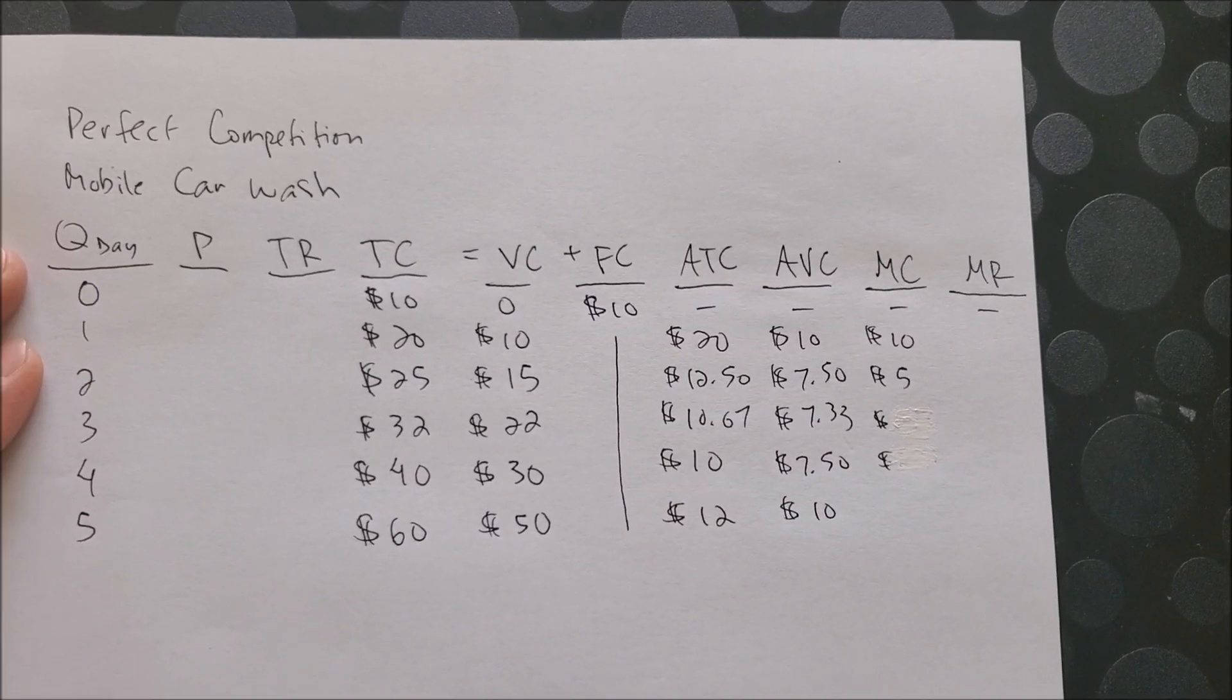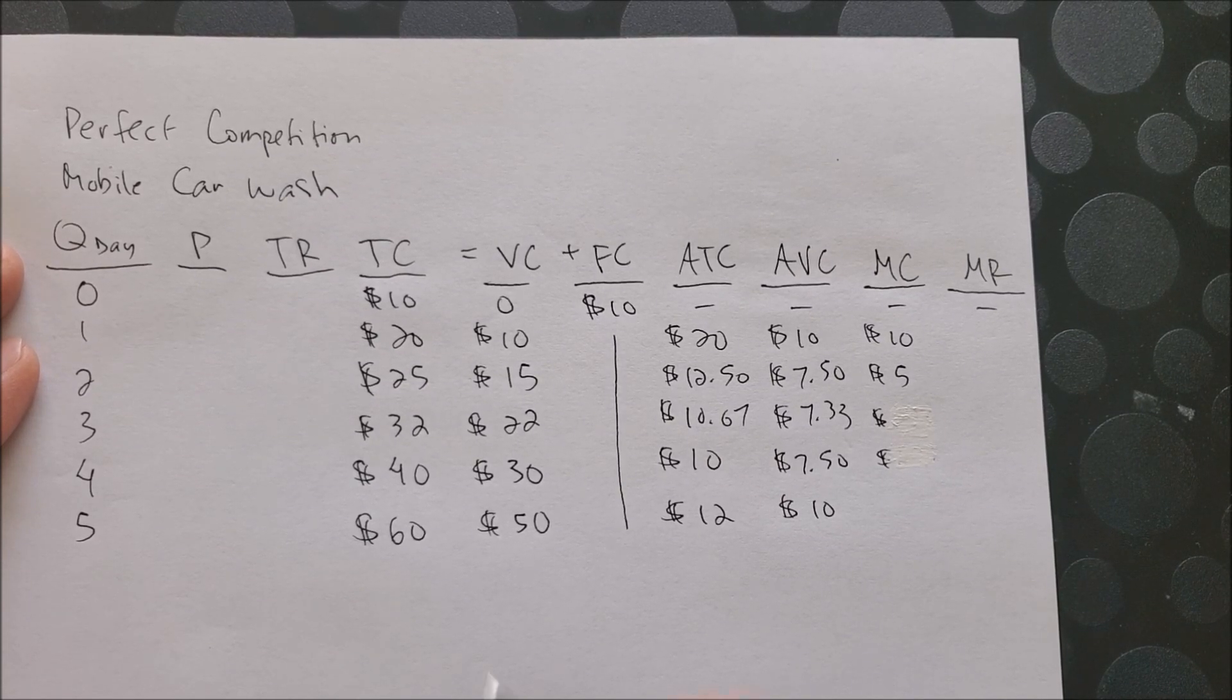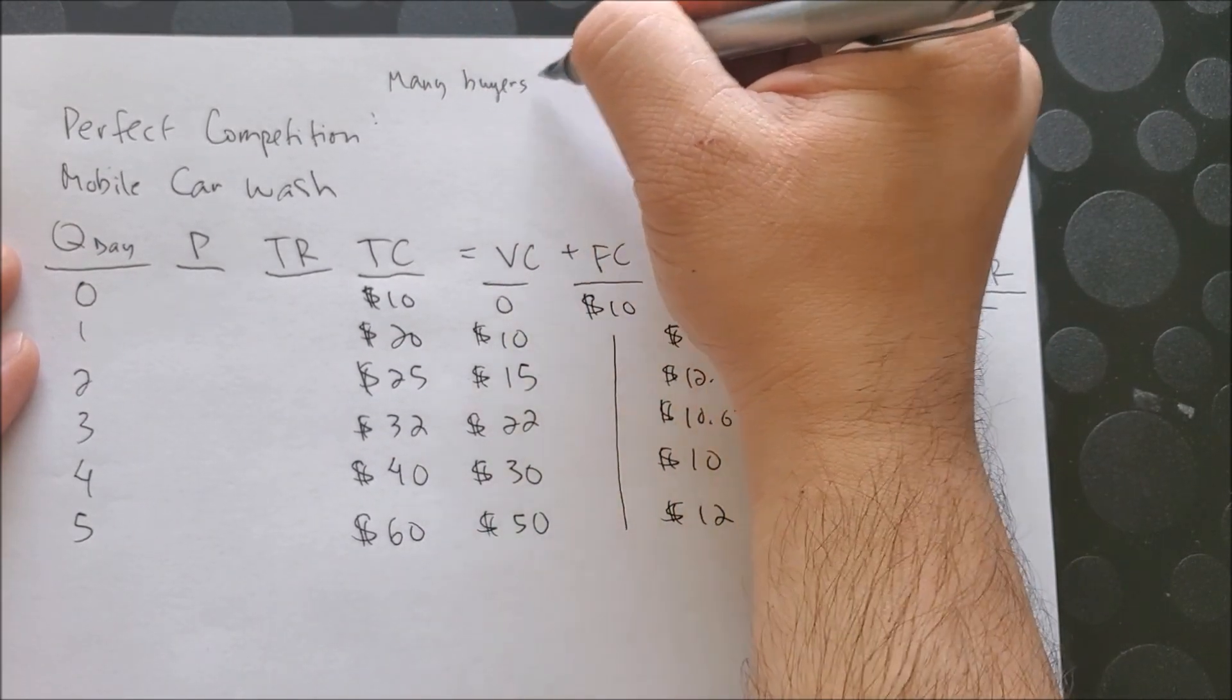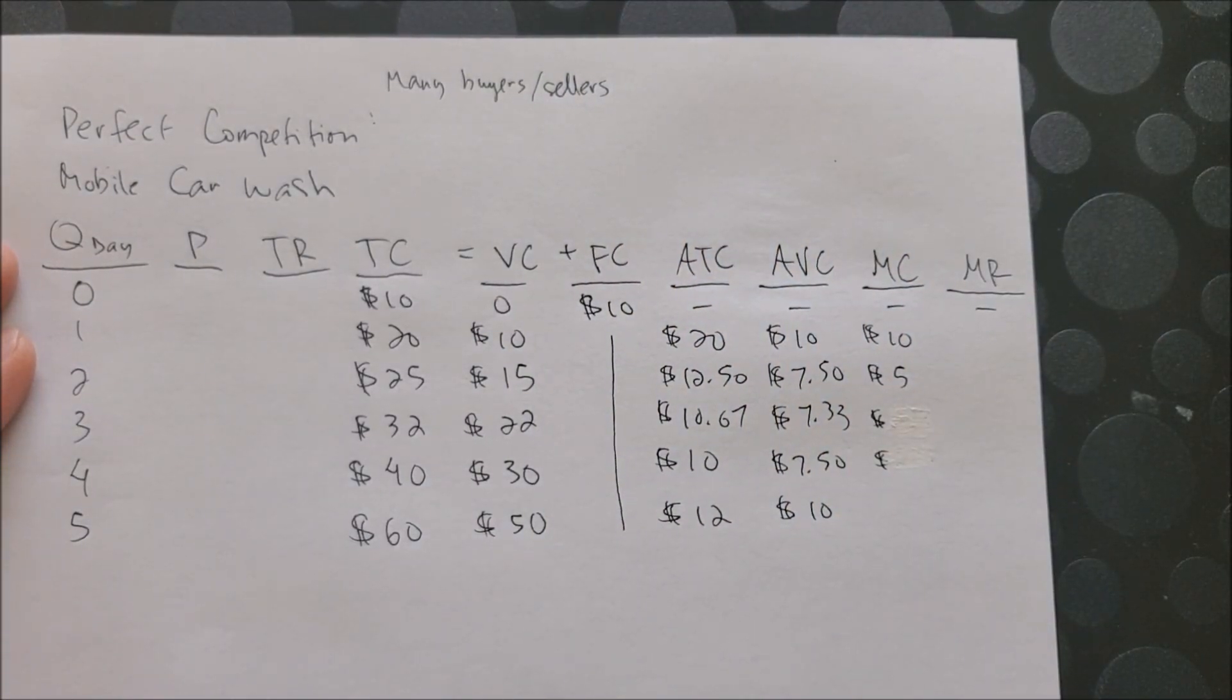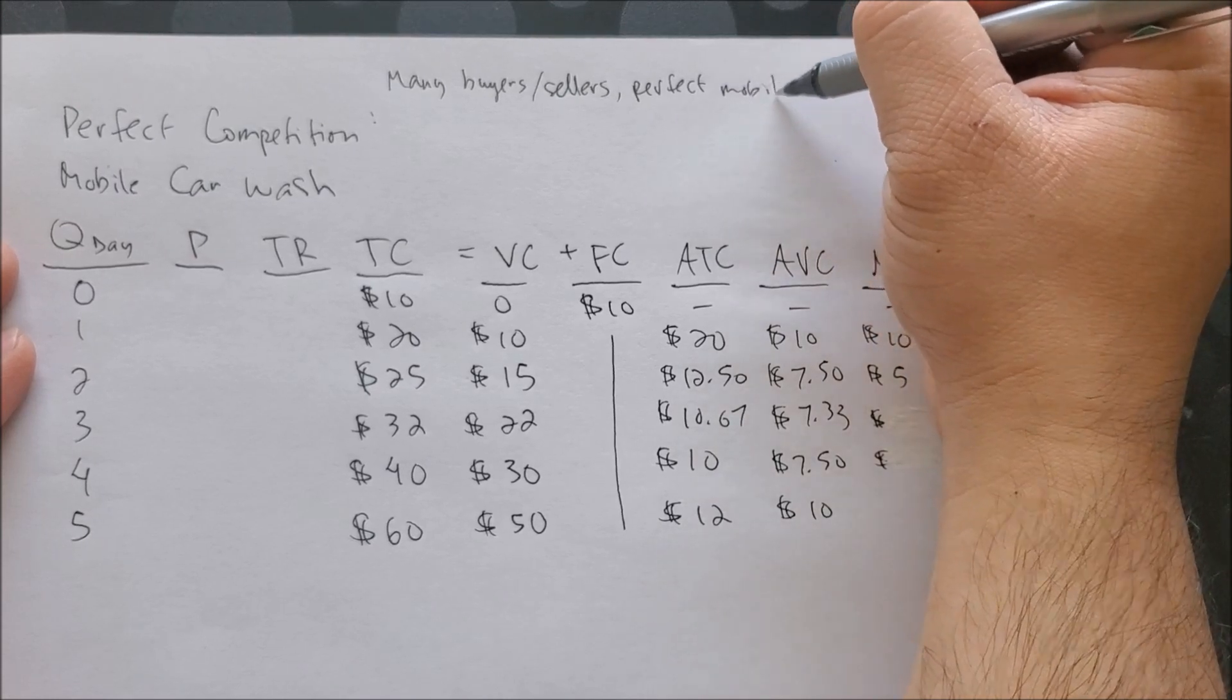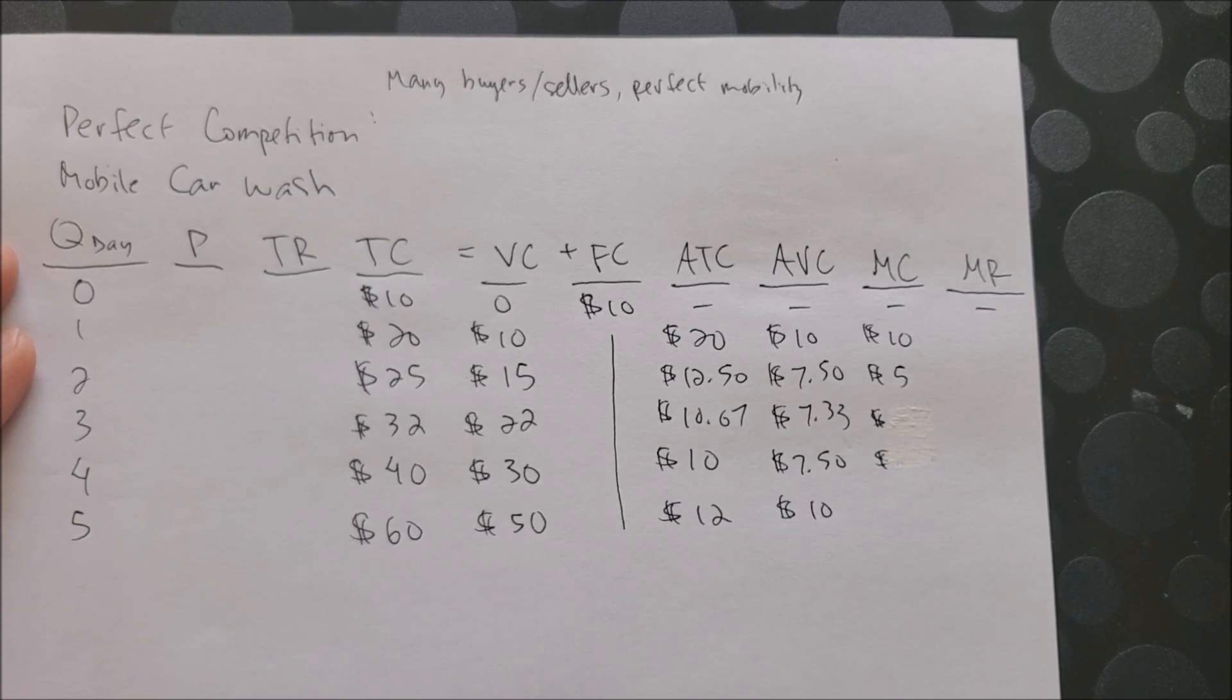Perfect markets in economics have a few assumptions about perfect competition. Think about the following: number one, we could assume that there are many buyers and many sellers. When there are many buyers and sellers, there's also what we call perfect mobility, which means consumers are able to go into the market freely, they can exit, and firms or producers could also enter the market freely and exit when they want to.